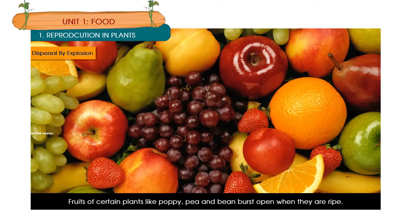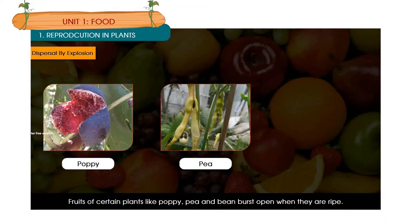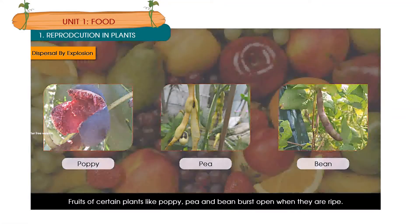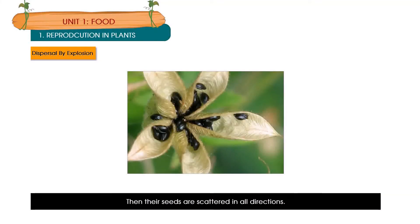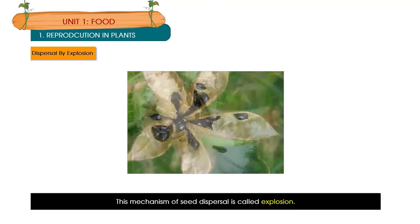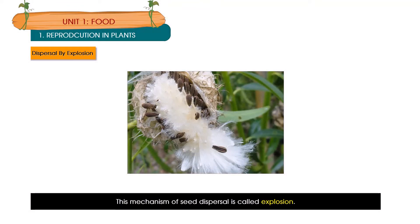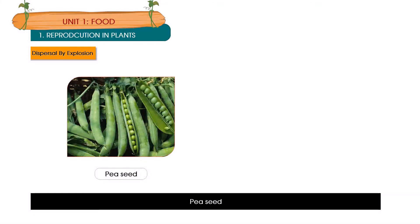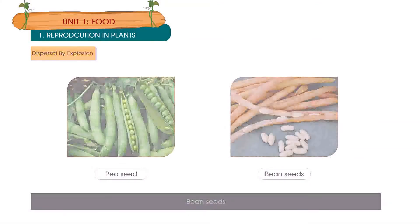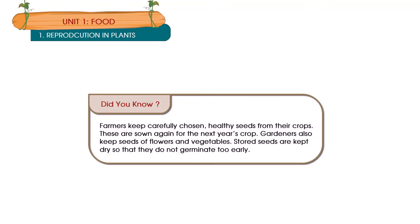Dispersal by explosion: Fruits of certain plants like poppy, pea and bean burst open when they are ripe, and their seeds are scattered in all directions. This mechanism of seed dispersal is called explosion. Did you know? Farmers keep carefully chosen healthy seeds from their crops, which are sown again for the next year. Gardeners also keep seeds of flowers and vegetables. Stored seeds are kept dry so that they do not germinate too early.